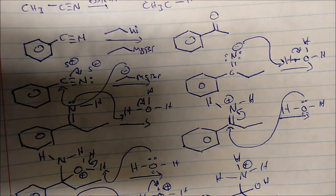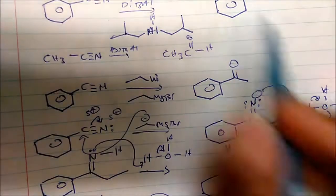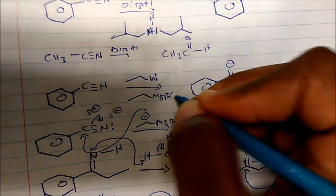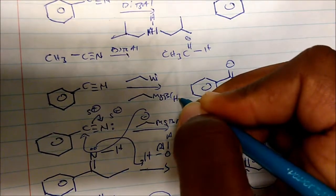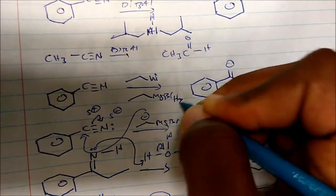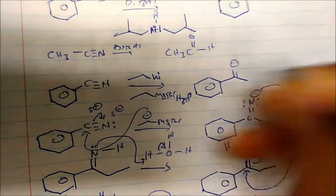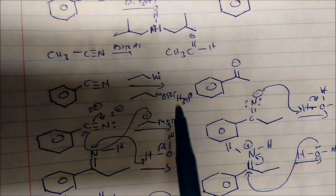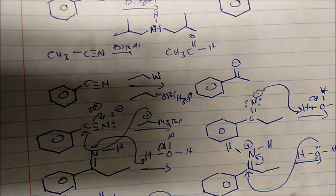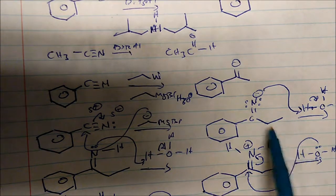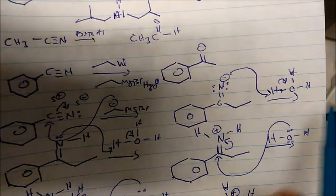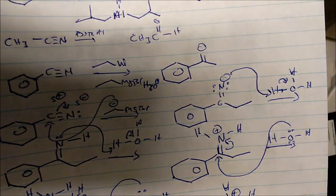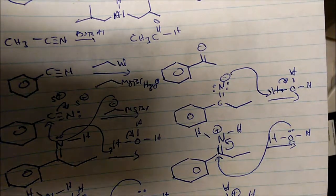We also get aldehydes from DIBAL. It's very important to note that we typically run these reactions in acid — that's something I didn't state initially. We run organolithium and Grignard chemistry in acid, and that's where the acid came from in the second step.